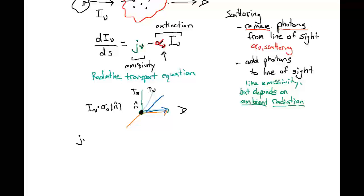So in fact, we can define an effective emissivity for scattering that is the integral of the intensity coming in from all different directions times the cross-section for scattering that light into our line of sight, and we can integrate this over all the solid angles over which light can be coming in at.